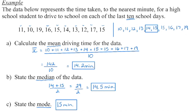Mode is the number that occurs most often. In this case, we have two 15s and don't have two of any other number. You can also have no mode if all values show up an equal number of times.